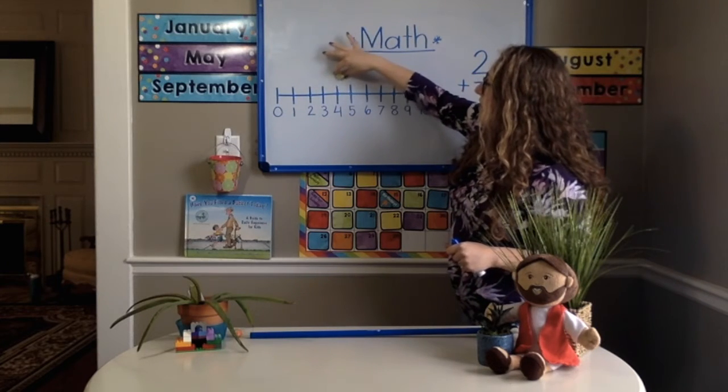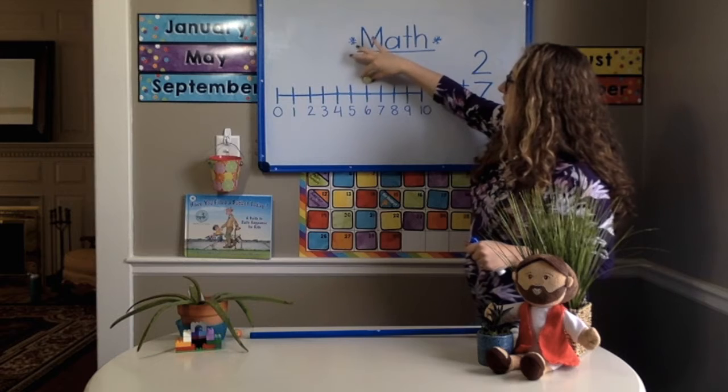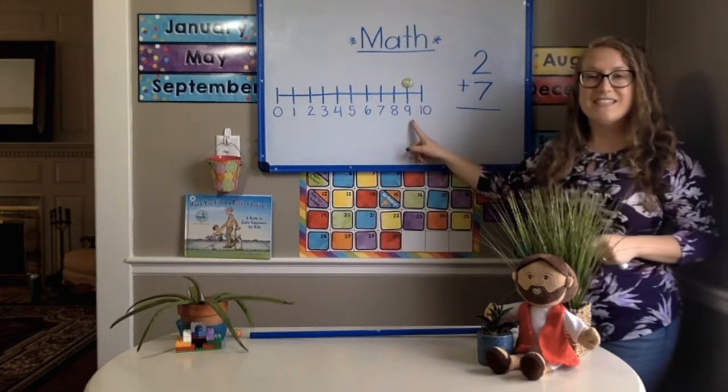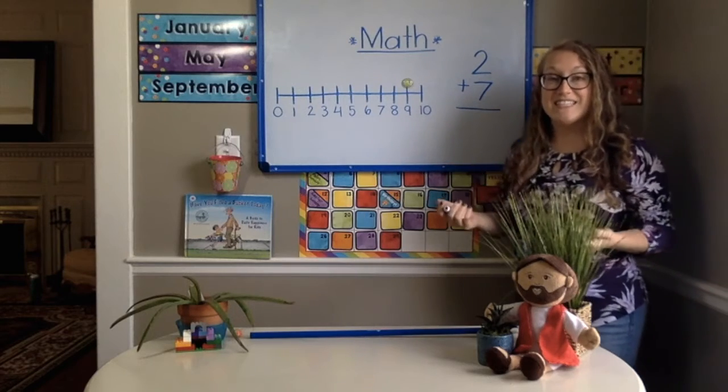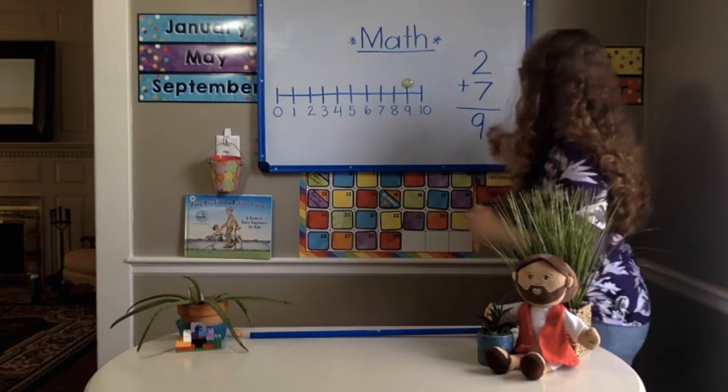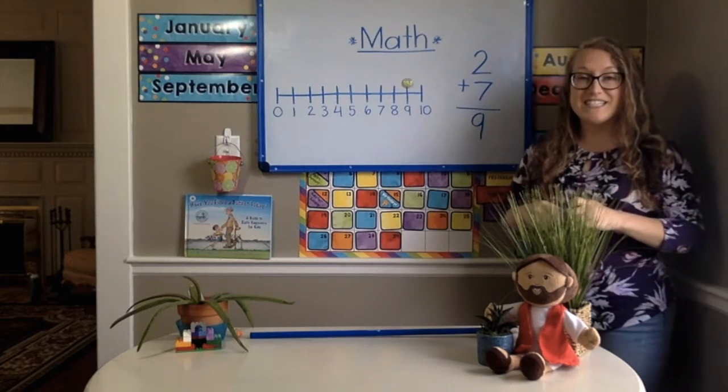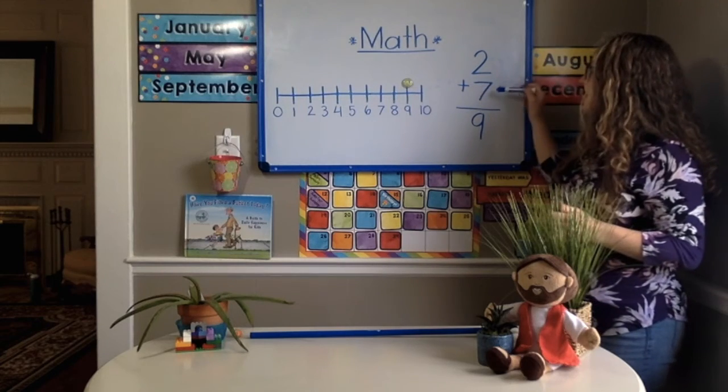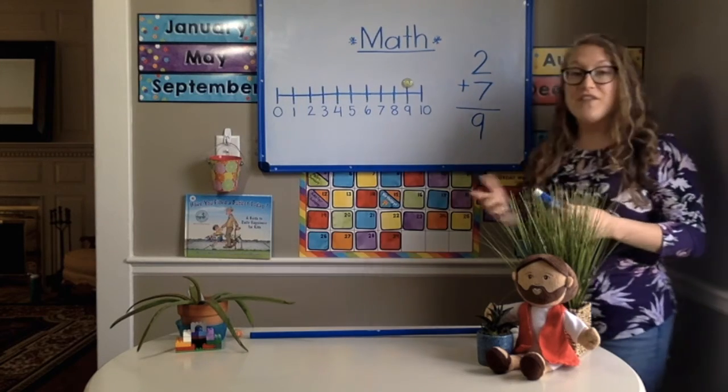1, 2, 3, 4, 5, 6, 7. And I landed at the number 9 kindergarten. I landed at the number 9. So, now we can read our last addition sentence and see what it says. It says 2 plus 7 equals 9. Very good kindergarten.